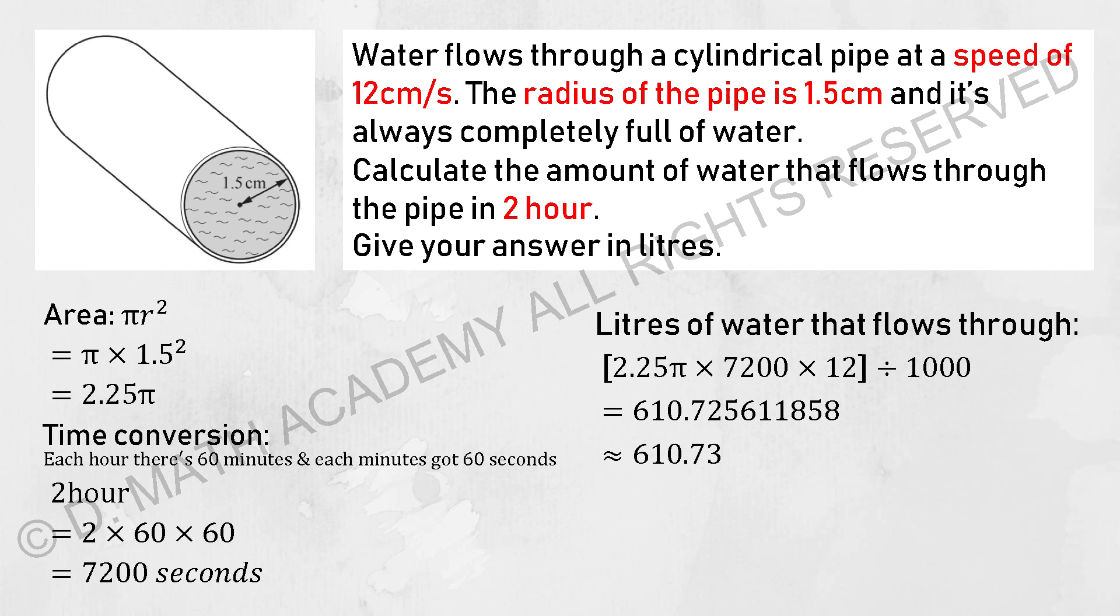So just take the 2.25π times 7,200, then multiply it by 12 because for each second, there will be 12 cm. Then divide by 1,000. Then you will get the water that flows through will be 610.73 liters.